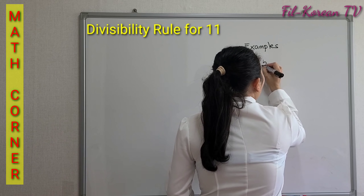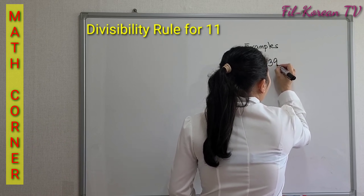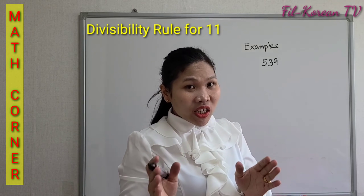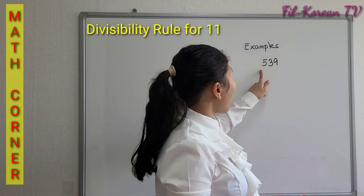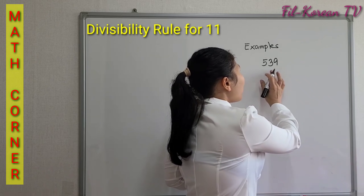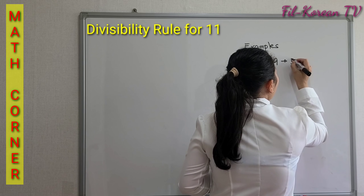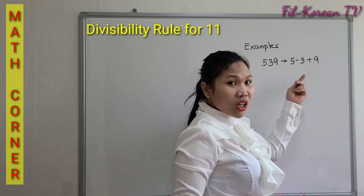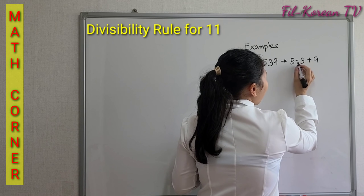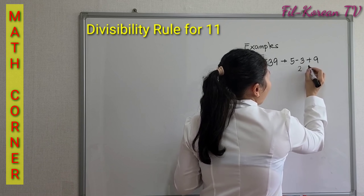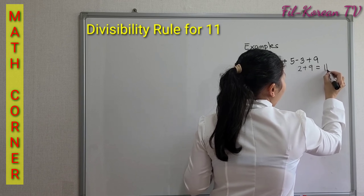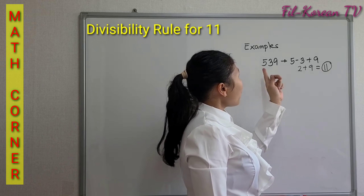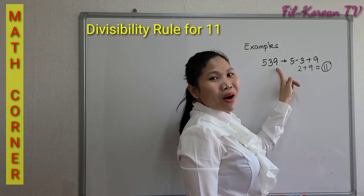Example: 539. According to the rule, we will subtract and add the digits of a number in alternating pattern from left to right. So, subtract first, then add: 5 minus 3 plus 9. 5 minus 3 equals 2, and then 2 plus 9 equals 11. Since the result is 11, therefore 539 is divisible by 11.